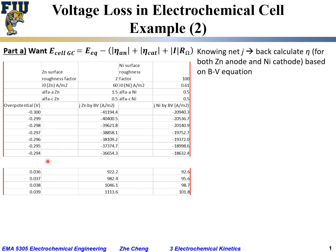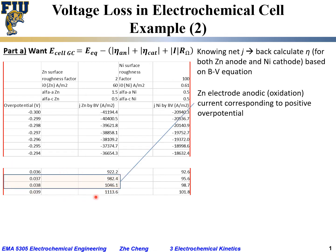The table continues, and at certain values we find that for the zinc electrode the current density becomes 980 and 1046 A/m². This defines the overpotential range: between positive 37 mV and positive 38 mV, the zinc electrode delivers an anodic current of 1000 A/m².